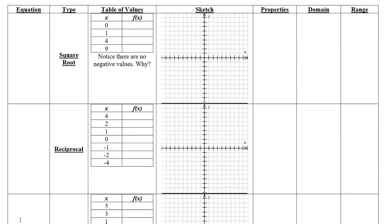Now we come to what's called a square root function. The function is f of x equals the square root of x. Let's just graph it — if you don't know what a graph looks like, we always start from a table of values. Once we understand what it looks like, we should be able to graph it quickly, but at this starting point we're going to use a table of values.